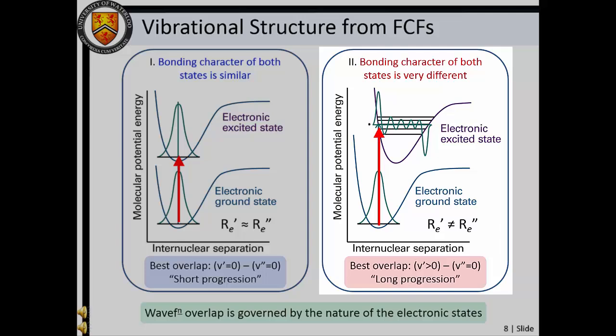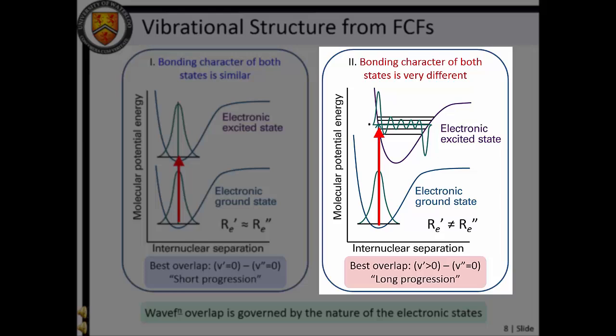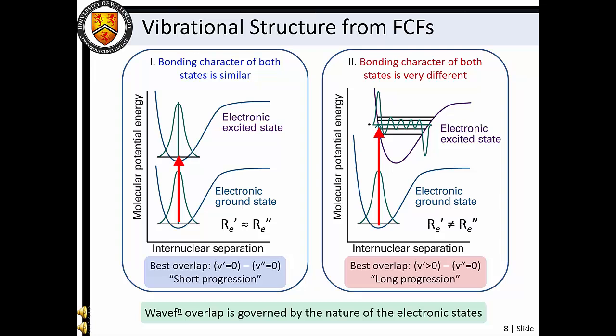The second scenario results in optimal overlap with a wave function where V' does not equal zero, and significant wave function overlap occurs across a range of V' values that are similar to the optimal value. In this case, a long progression is observed for a series of transitions between the V' equals zero and the excited state V' levels.